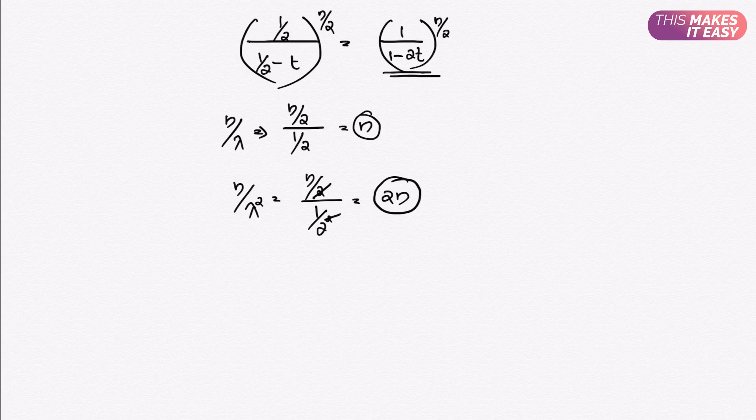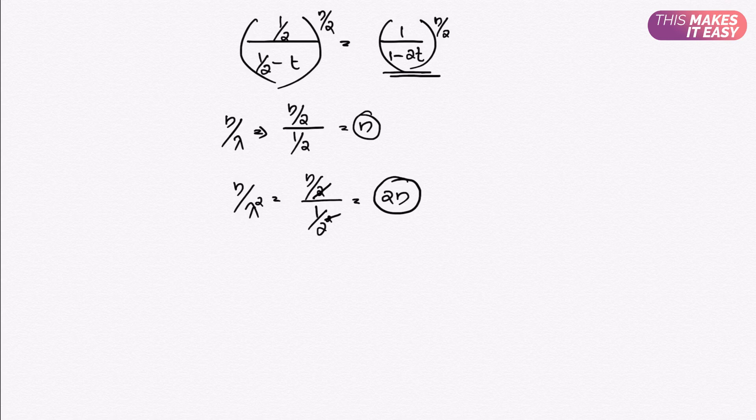The chi-square distribution is very important because many test statistics are approximately distributed as chi-square. Applications include finding confidence intervals for variance, testing goodness of fit, and testing independence. In summary, we introduced the chi-square distribution, connected it to the gamma distribution, derived its PDF and MGF, computed mean and variance, and discussed its uses.